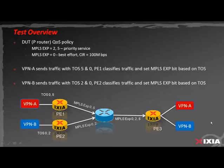We will simulate IP traffic coming from VPN A behind PE1 router over VPN A behind destination PE3 router. The traffic will carry 2 classes of services marked by IP TOS 0 and 5, which will be automatically remarked by PE1 to carry MPLS EXP 0 and 5, and MPLS tunnel EXP 0 and 2. Similarly, we will simulate IP traffic coming from VPN B behind PE2 router over VPN B behind destination PE3 router. The traffic will carry 2 classes of services marked by IP TOS 0 and 2, which will be automatically remarked by PE2 to carry MPLS tunnel EXP 0 and 2.